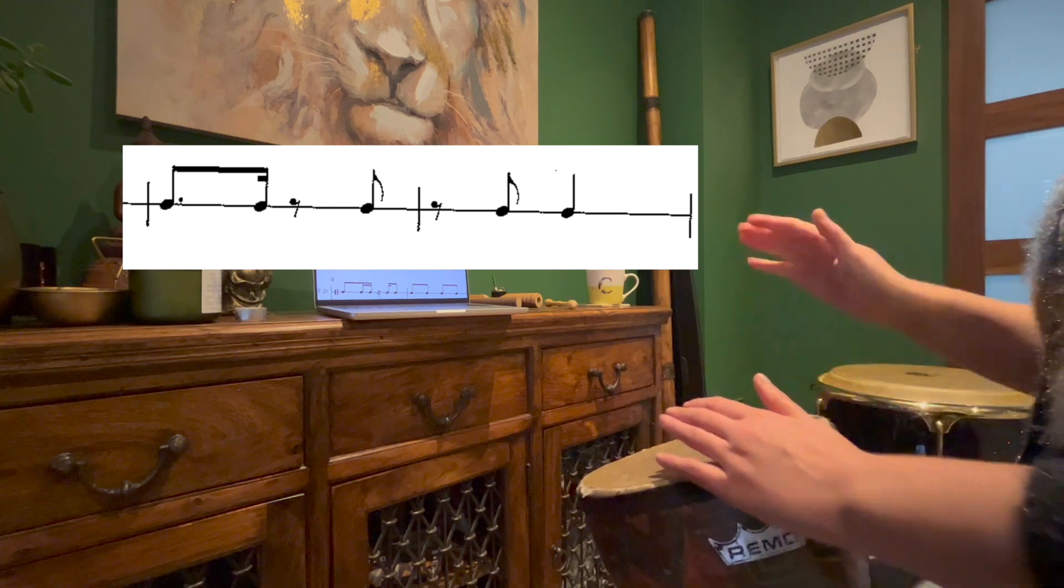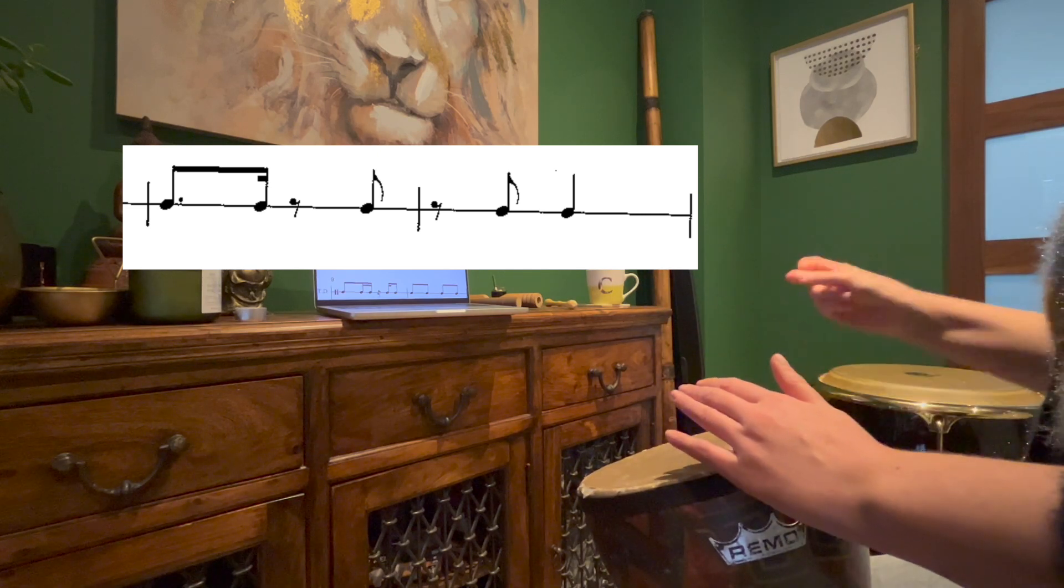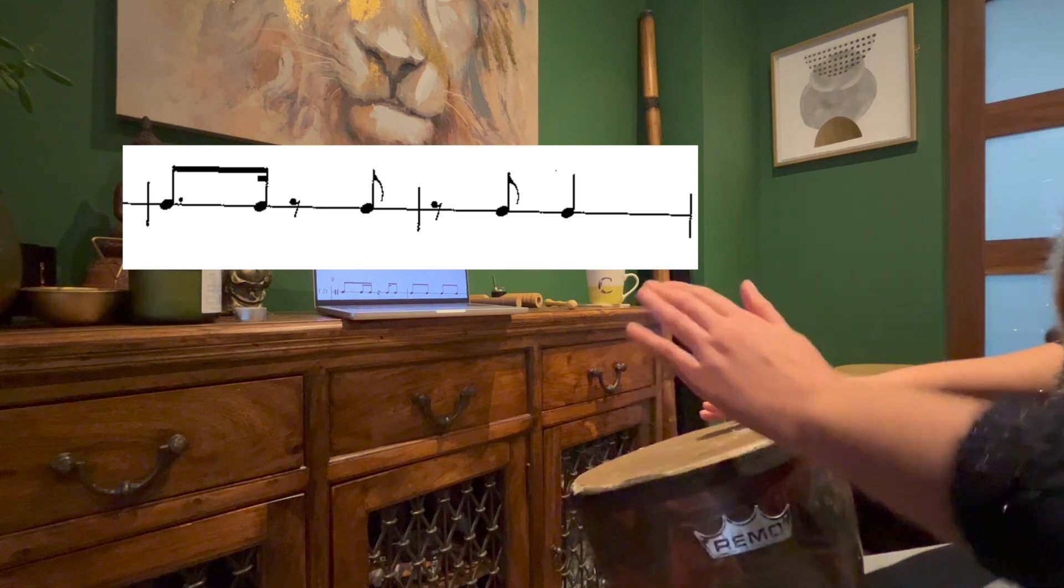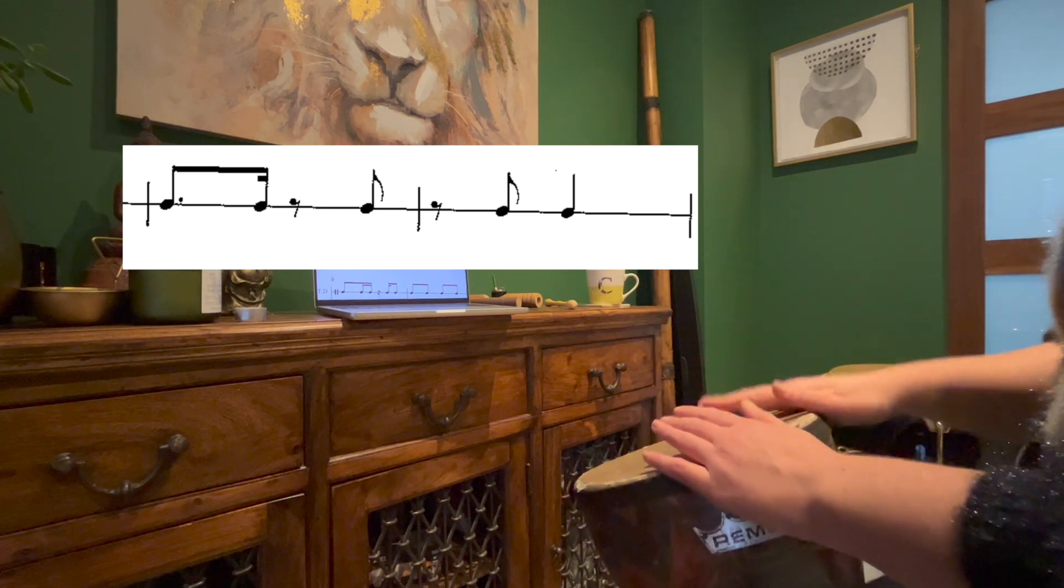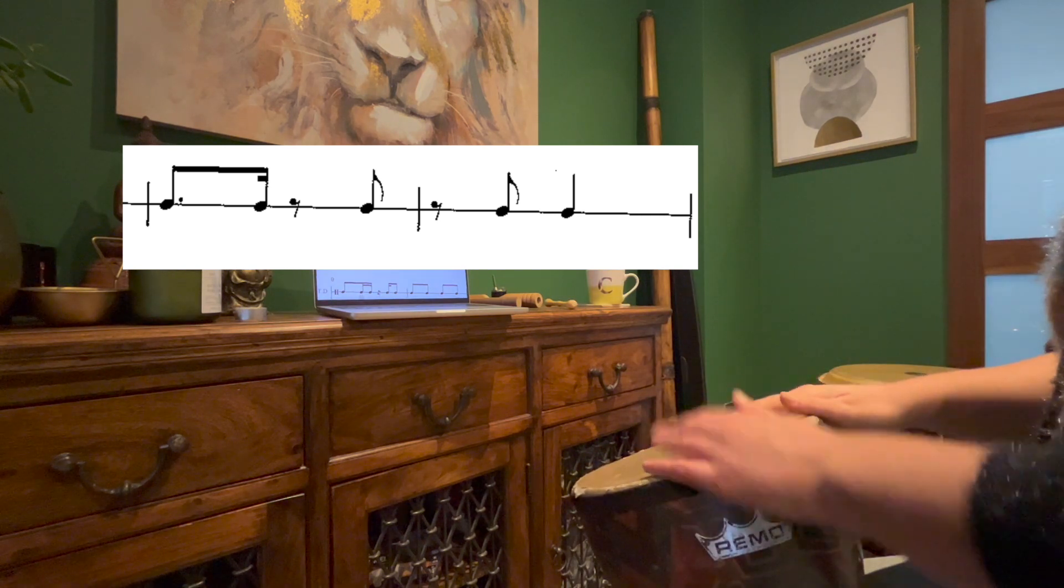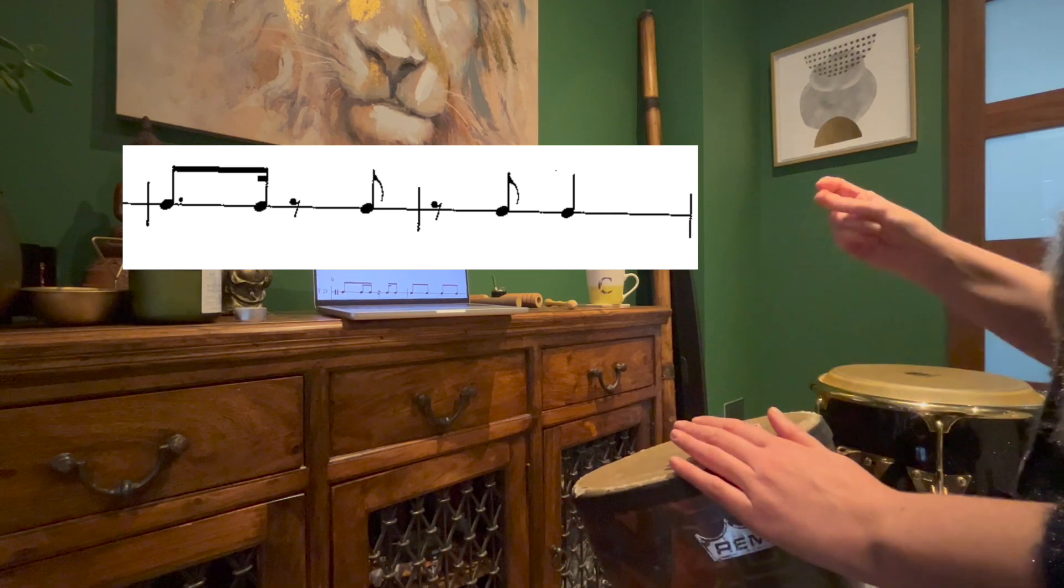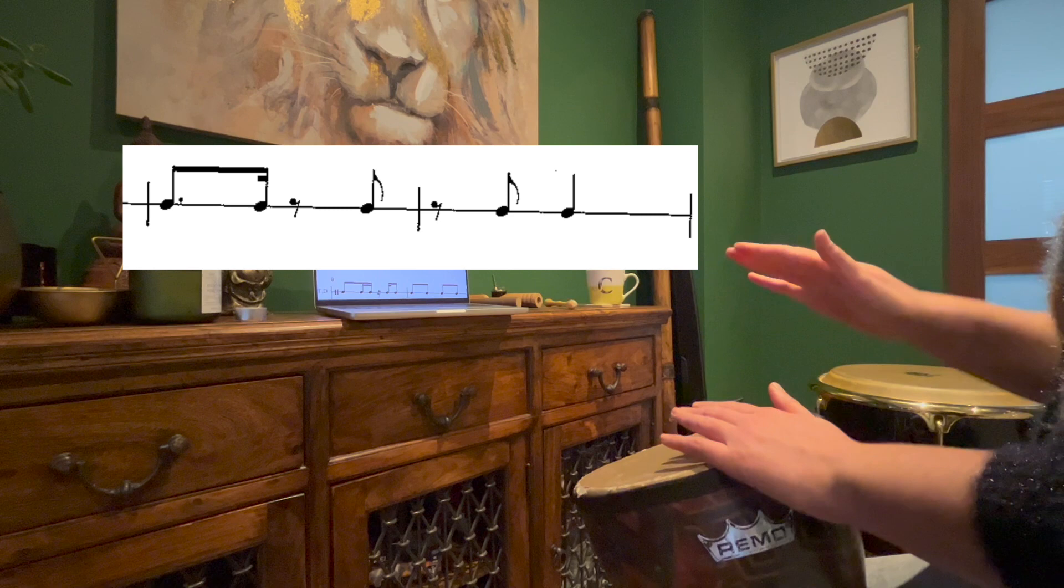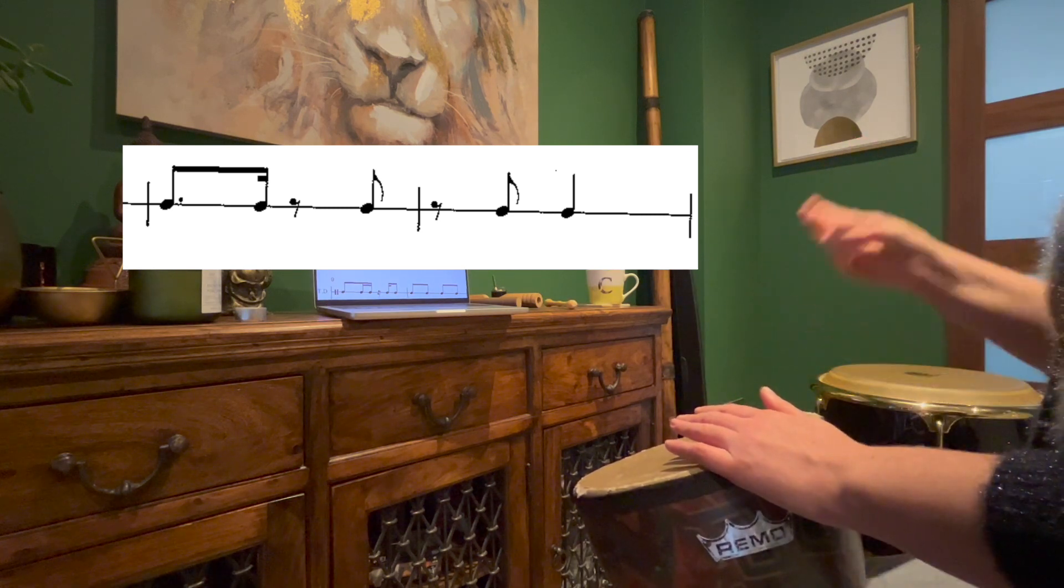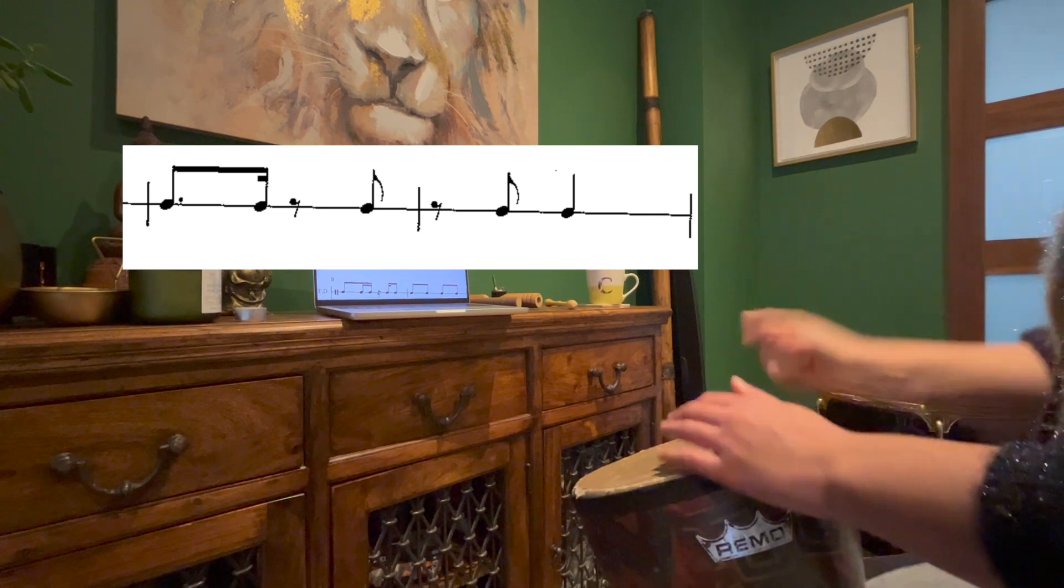And then the second bar is one, two, one, two, three, one, two, one, two, one, one, two, one. So when you put the two together, two and go.